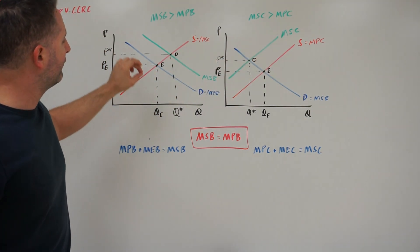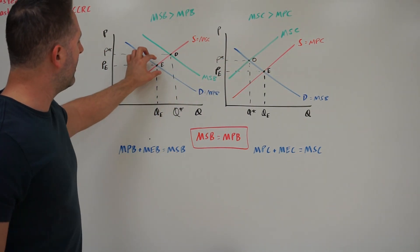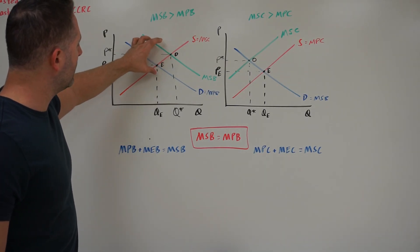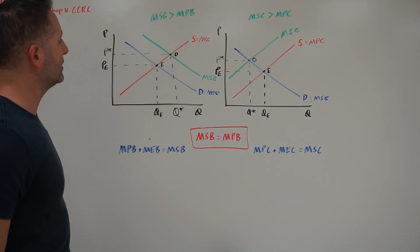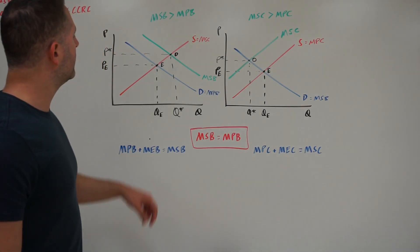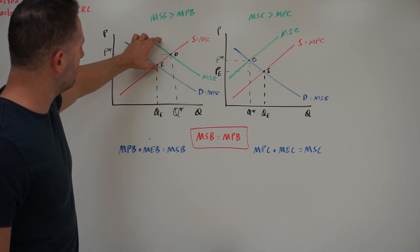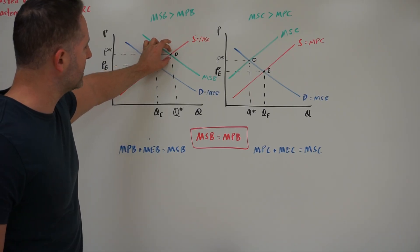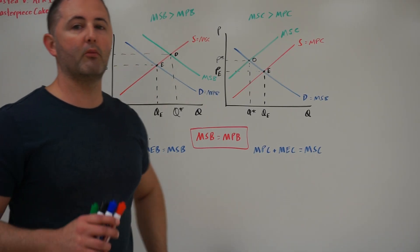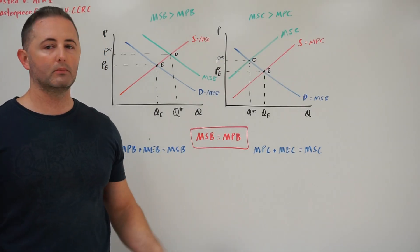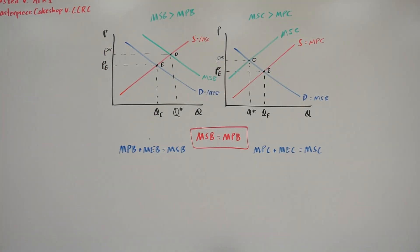Same principle on the other side. When we go from point O back down to point E, these are units that should be consumed because the marginal social benefit is greater than the marginal social cost. So again, that principle of marginal analysis will serve us well in this lesson. Until next time, this has been a LaMoney production.